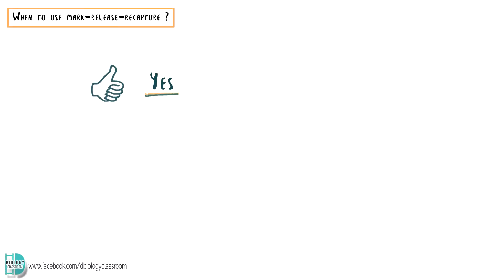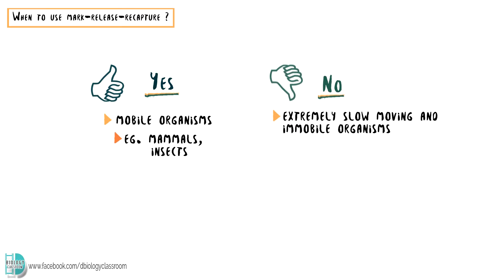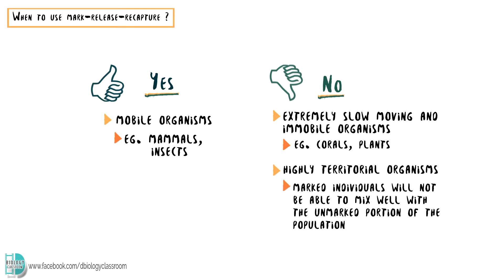It is suitable for mobile organisms such as mammals and insects. It cannot be used to sample extremely slow-moving and immobile organisms such as corals and plants. It is also not suitable for highly territorial organisms, as the marked individuals will not be able to mix well with the unmarked portion of the population after they are released. Examples include wolf packs and some bird species.